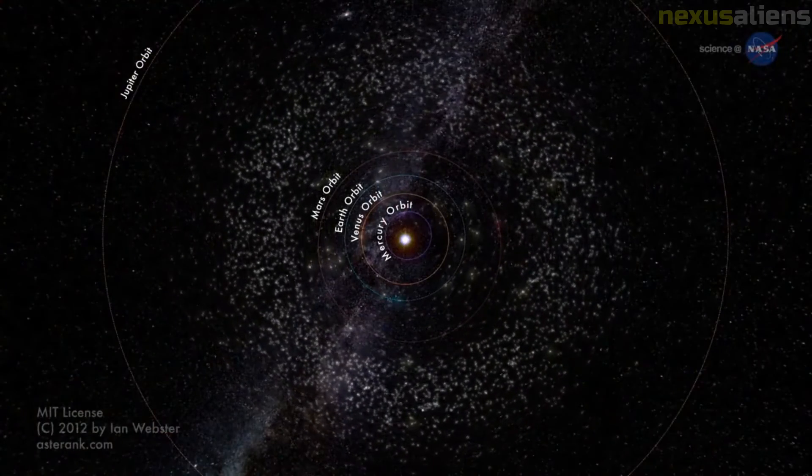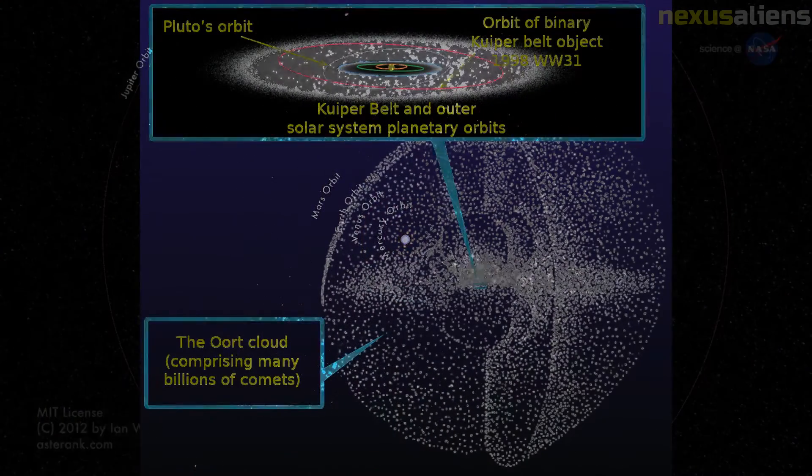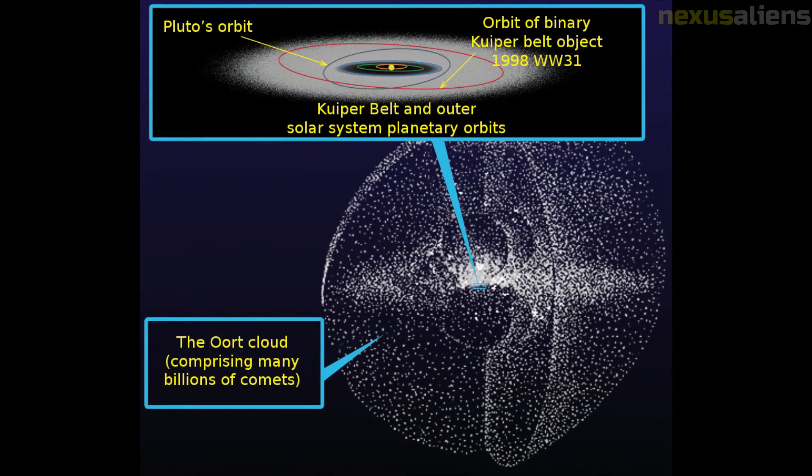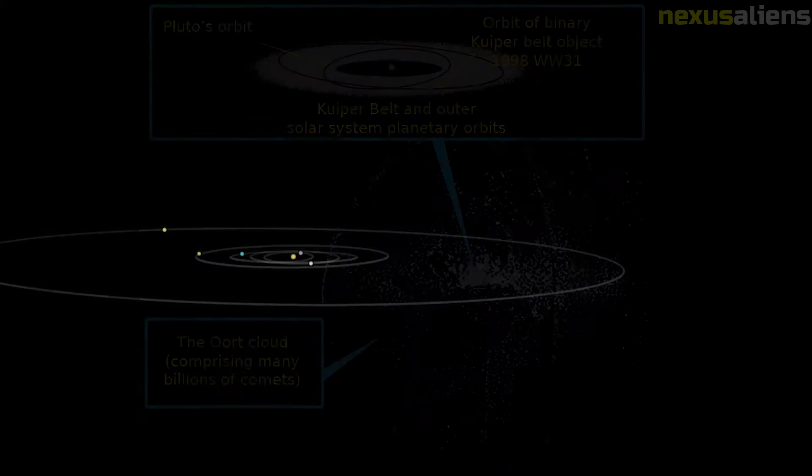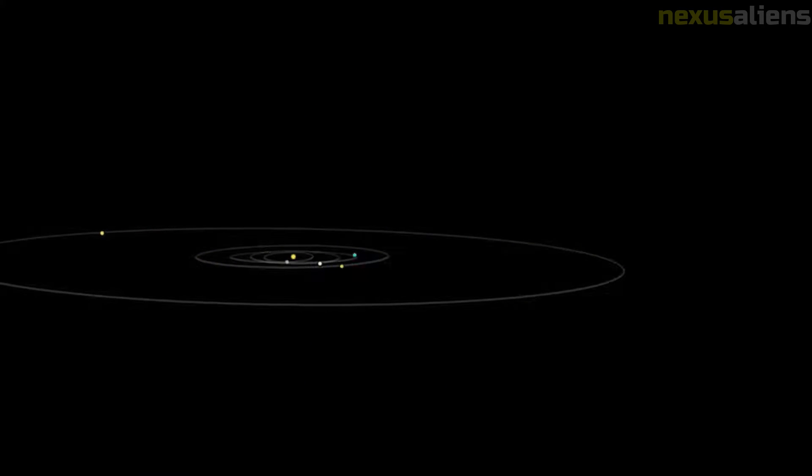In May 2020, it was proposed that the object was the first observed member of a class of small H2 ice-rich bodies that form at temperatures near 3 kelvins in the cores of giant molecular clouds. The non-gravitational acceleration and high aspect ratio shape of Oumuamua might be explainable on this basis. It was later calculated that hydrogen icebergs cannot survive their journey through interstellar space.